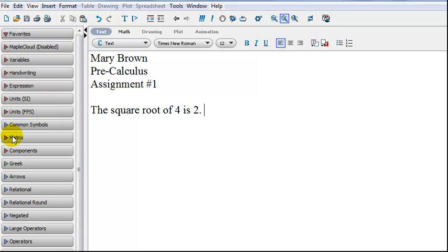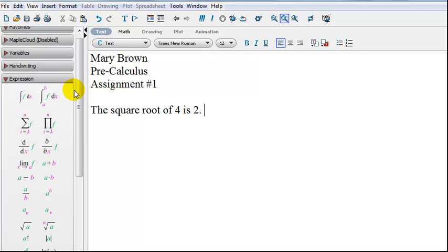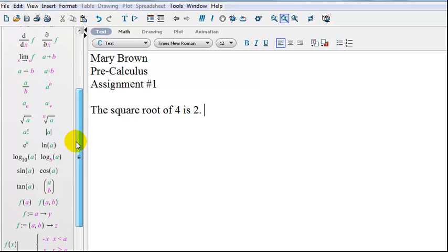On the left-hand side there are many palettes, and we can click on these triangles to open up a palette. In the expression palette there are a lot of nice symbols here, including the square root symbol. We can type 4 to replace that letter A, and now we have the square root of 4 and we can say equals 2.